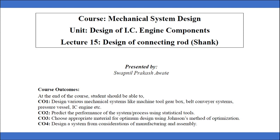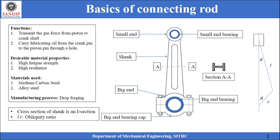The function of a connecting rod is to transmit the gas force from the piston to the crankshaft. In some cases it also carries lubricating oil from the crank pin to the piston pin through a hole drilled along the length of the connecting rod.